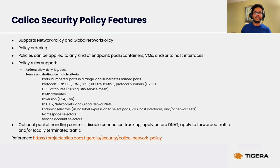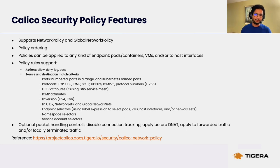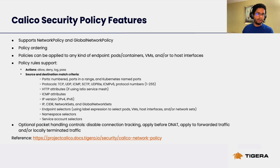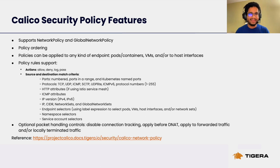Calico supports network policy and global network policy — when I say security policy I'm referring to both. We support policy ordering. Calico policies are an extension of Kubernetes policies; however, Calico offers several more extensions than what's available in native Kubernetes policies, and policy ordering is one of those. We'll look at how you could leverage policy ordering when building a policy model. Policies can be applied to any kind of endpoint — pods, VMs, or hosts external to the cluster.